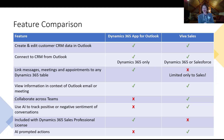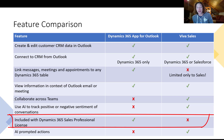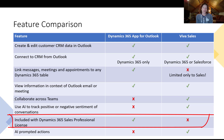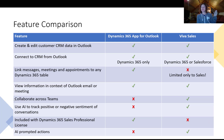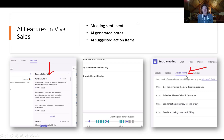Let's talk licensing. The Dynamics 365 Sales Professional license, currently $65 per user per month, is the base sales license and does include the Dynamics App for Outlook. It does not include Viva Sales — you'll need a premium sales license in order to get Viva Sales included for free.